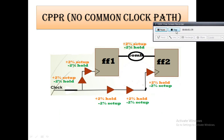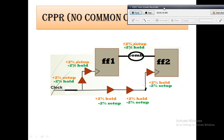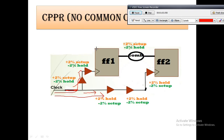Now let's go into the main part — CPPR. First, let's understand common clock path pessimism. In the diagram, you can see the launch flop and the capture flop. The launch clock path starts from one point and the capture clock path goes along another. The black highlighted portion is the common path — the common clock path. When any pair of launching and capturing flop has a common portion of the clock path, the difference between the max and min delay of that common clock segment is referred to as common path pessimism.